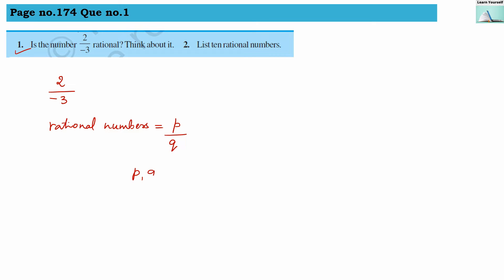p and q are integers and q should not be and never can be zero. In this format, whenever the numbers are there, they are termed as a rational number, either they are positive or negative, but they are rational numbers.